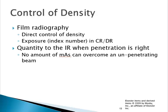In computer applications, MAS directly controls our index number, with a direct correlation between mass and index number. If you double your mass, you should see a change in your index number by a factor of two. For example, if you shoot with an index number of 400 and double your mass, your index number should go down proportionally to 200. There's a direct correlation between intensity at the image receptor, your mass value, and your index number. Mass is the direct control of quantity at the image receptor whenever penetration is correct.